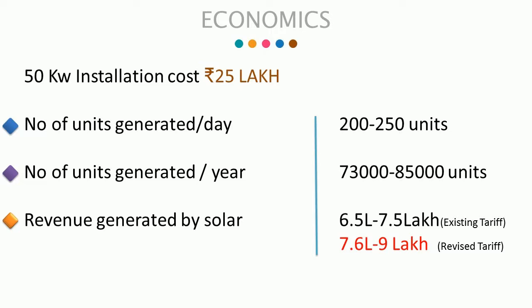A 50kW setup will cost 25 lakh rupees, and will generate around 200 to 250 units a day — that is around 75,000 to 85,000 units a year. 75,000 units at ₹10.42 paise is roughly 8 lakh rupees, which means you are going to save 8 lakh rupees a year by going solar.